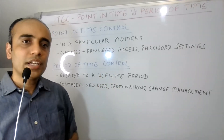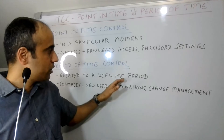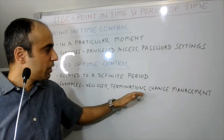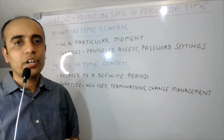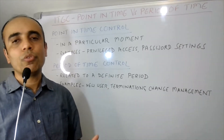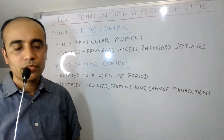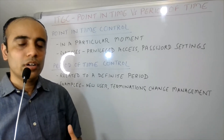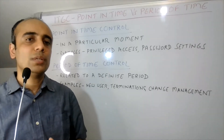On the other hand, the second category is the period of time control, which refers to a definite period. Testing related to control areas like provisioning, terminations, and change management will all involve requesting evidence for a definite period of time — like getting a listing of accounts created or removed in the last six months or one year, or getting a list of changes deployed in the last six months. Such controls are referred to as period of time controls because they relate to a definite period.